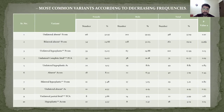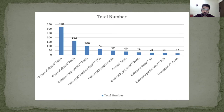These are the most common variants according to decreasing frequencies. The most common variant is the unilateral absent posterior communication, and the least common is hypoplastic anterior communication.